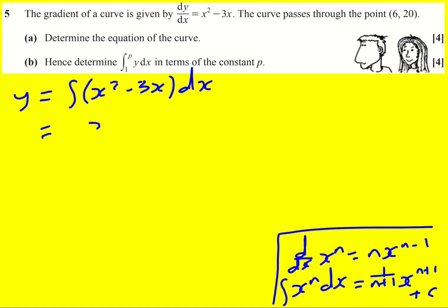So first up add 1 to the power, divide by it. I like to write it as a fraction so it's a third x cubed. And here we're going to end up with x squared divided by 2, so it's 3 over 2. Again I like to have a fraction. You could write it as 3x squared all over 2.